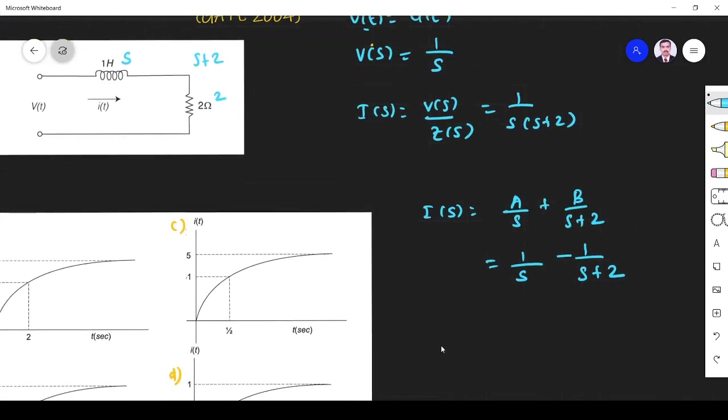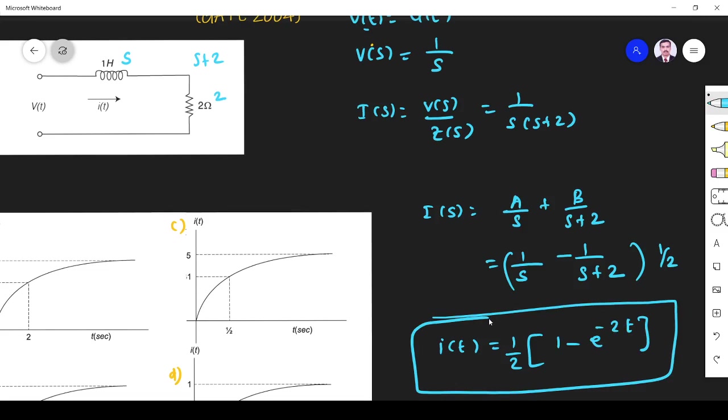Now what I want? I want I(t). That's what they are asking in the question. So before that we have to take 1/2 as common. So 1/2 for 1/s, inverse Laplace is 1. For 1/(s+2), inverse Laplace is e^(-2t). So I(t) equals 1/2 times (1 - e^(-2t)).